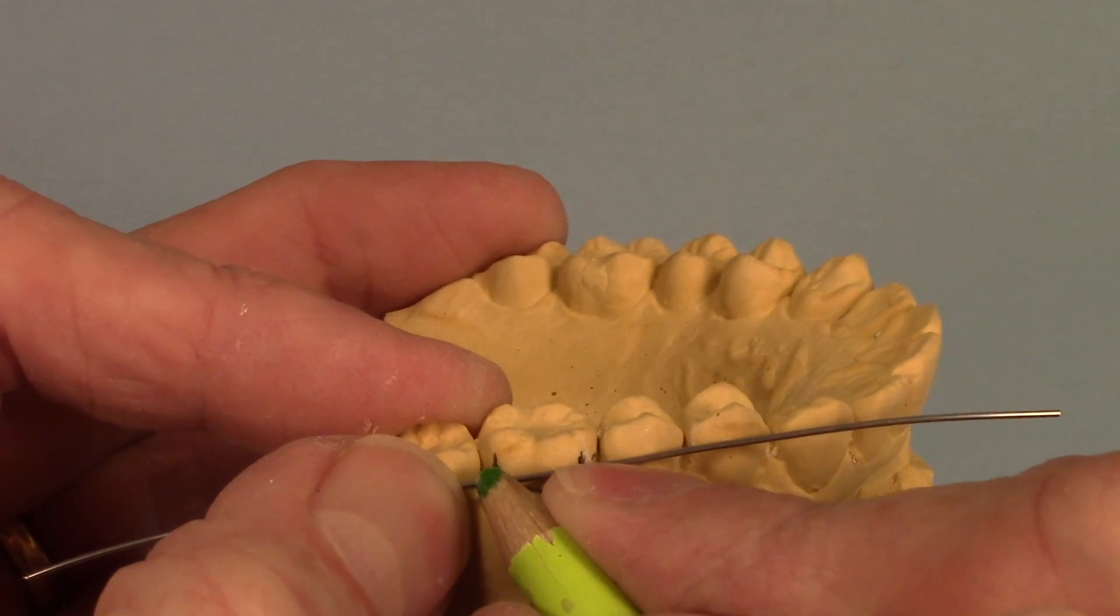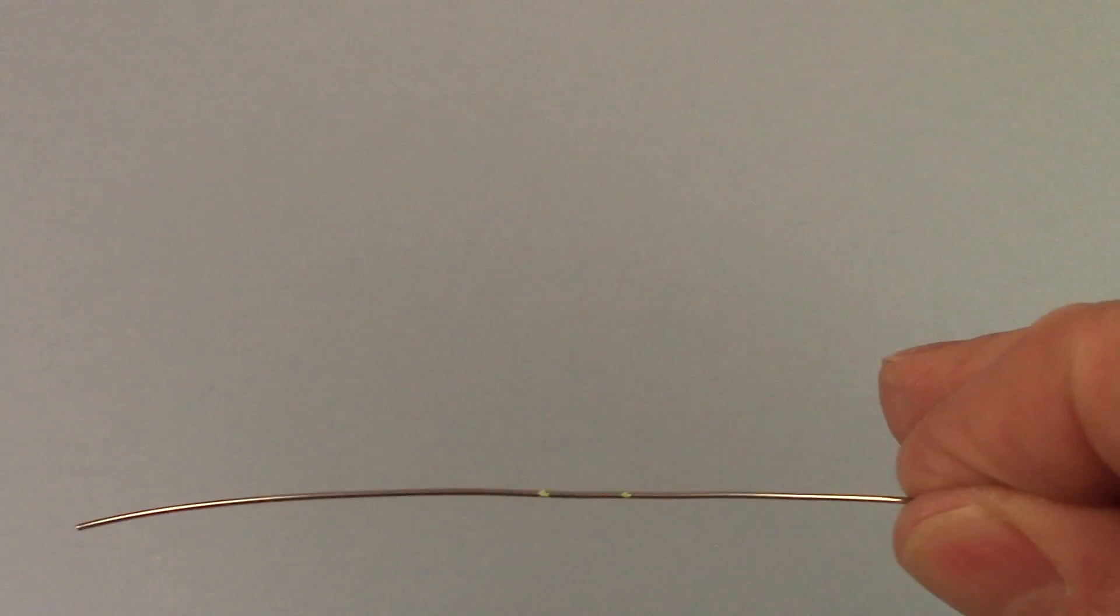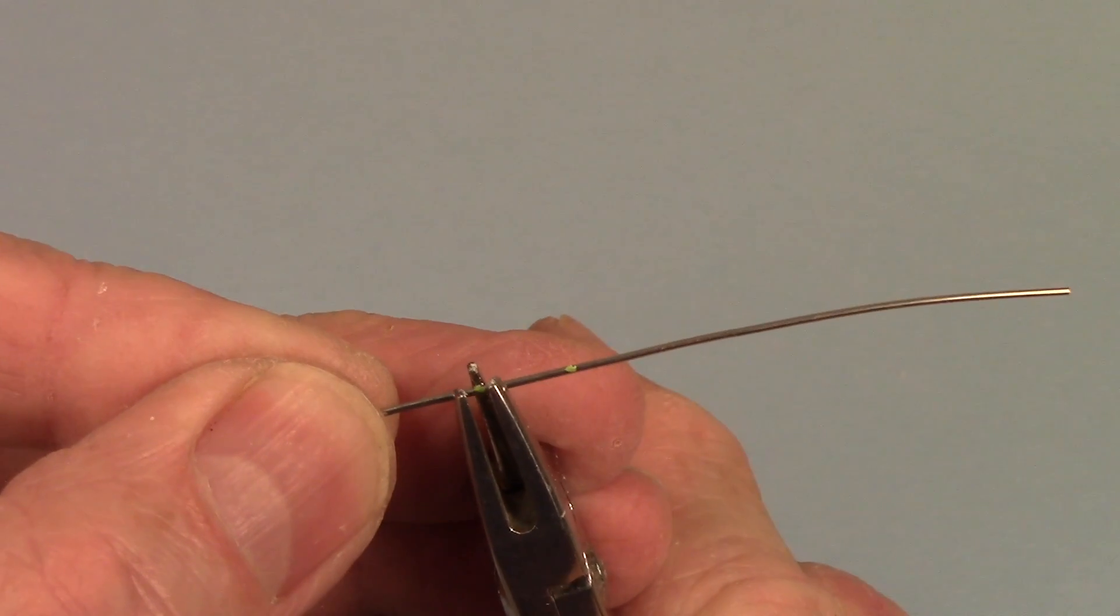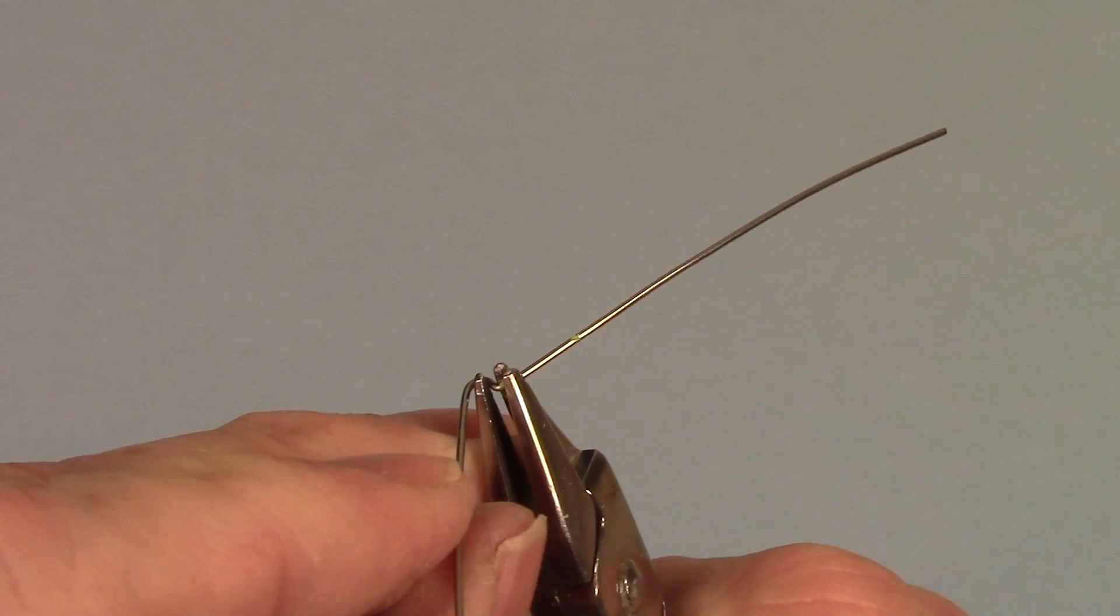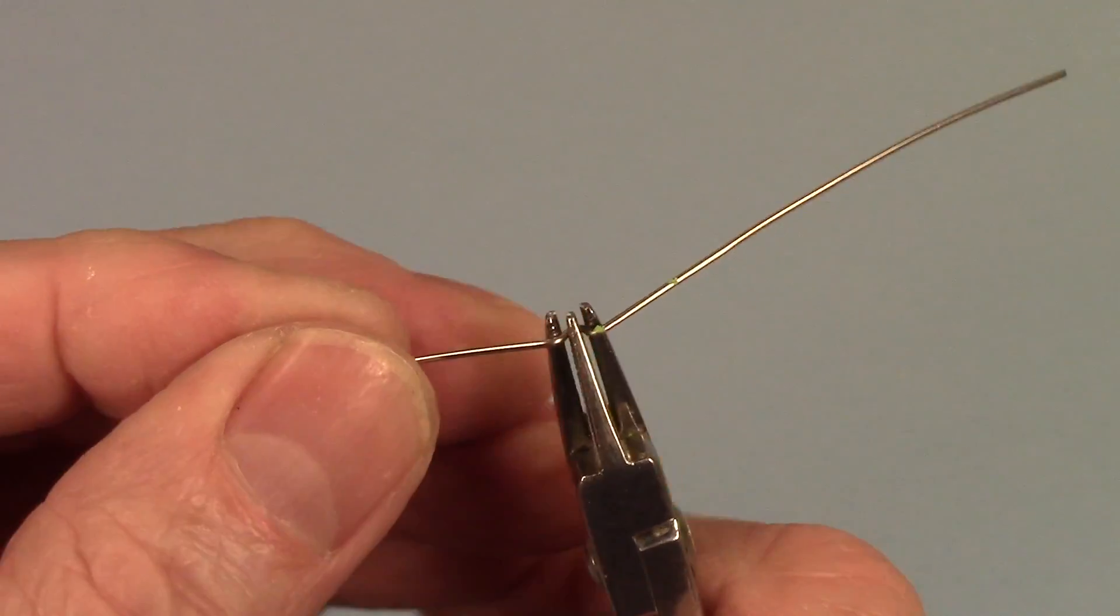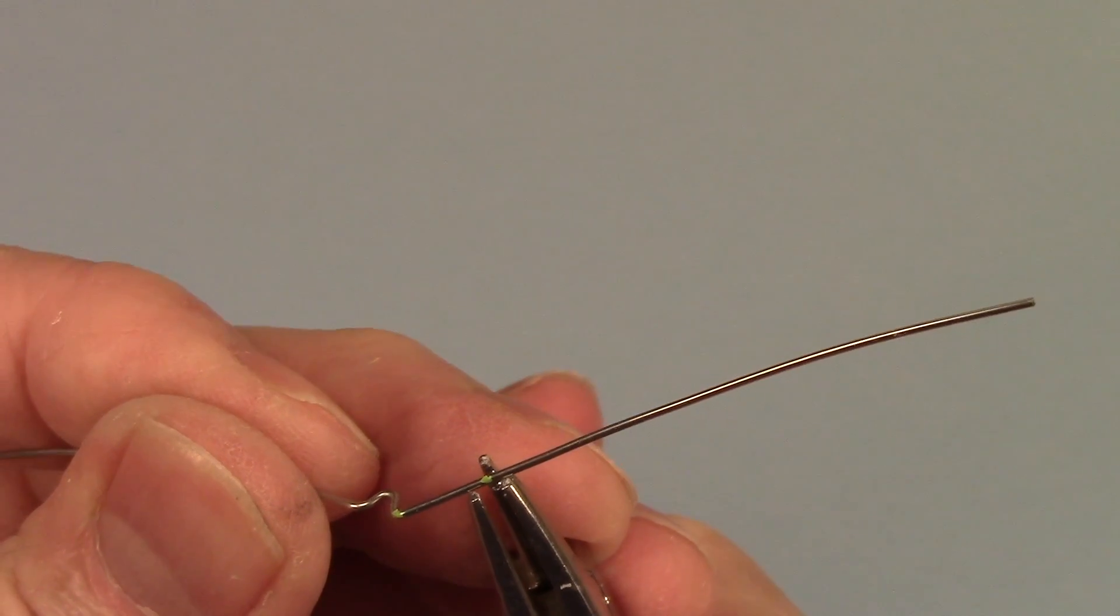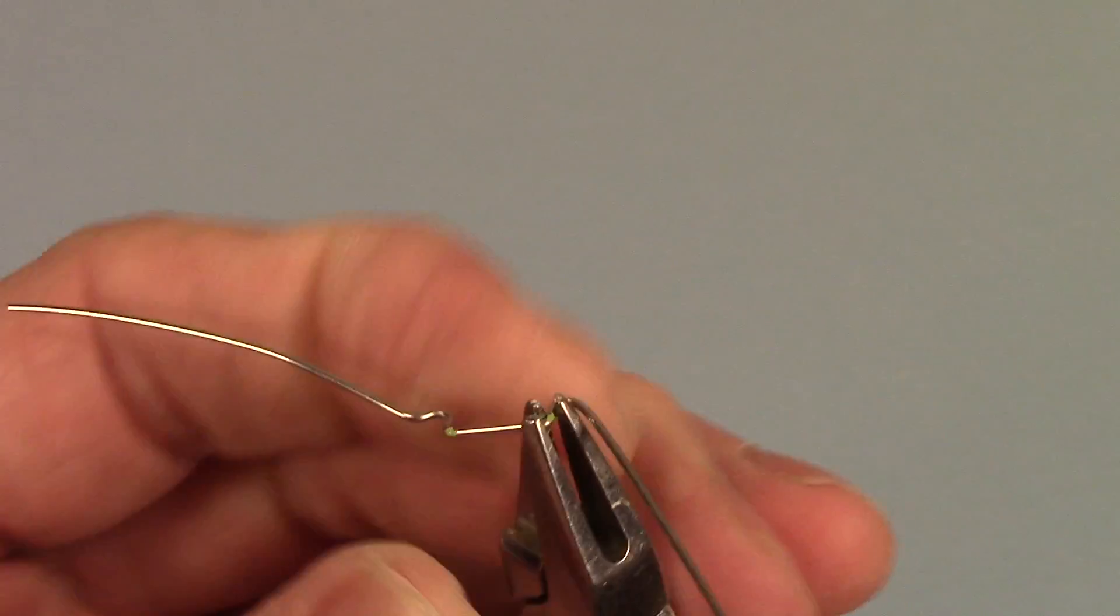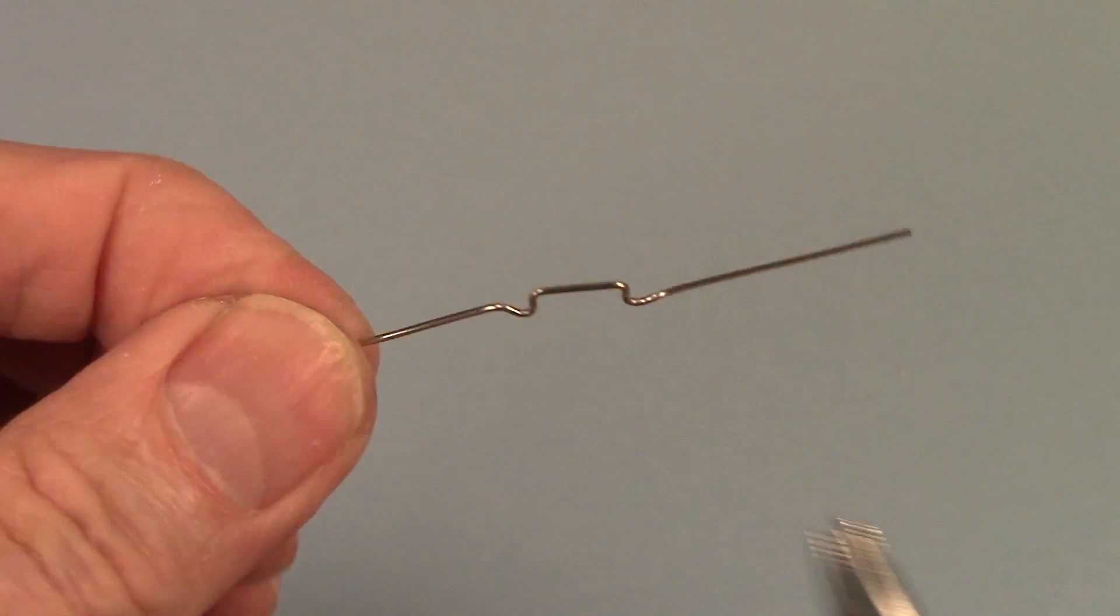Now I'm going to mark like right here and right here where I want those loops to be. Now a very simple easy way to do that is to take a pair of three prong pliers and I'll put it on that first mark and I'm going to bend it down. I'm going to bend it back and then I'm going to flip the plier, put it in the loop and bend down again. So I get this basic form like that. Okay I'm going to go over here and bend it down, bend it back, flip the pliers and go back down. So I end up with this right here.